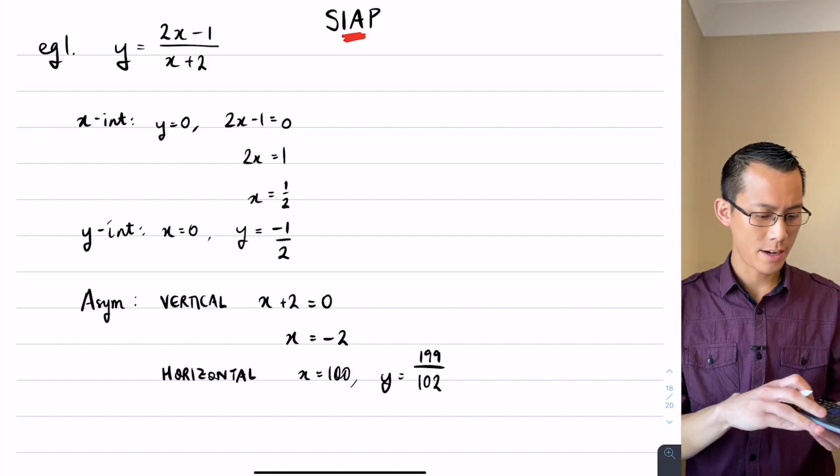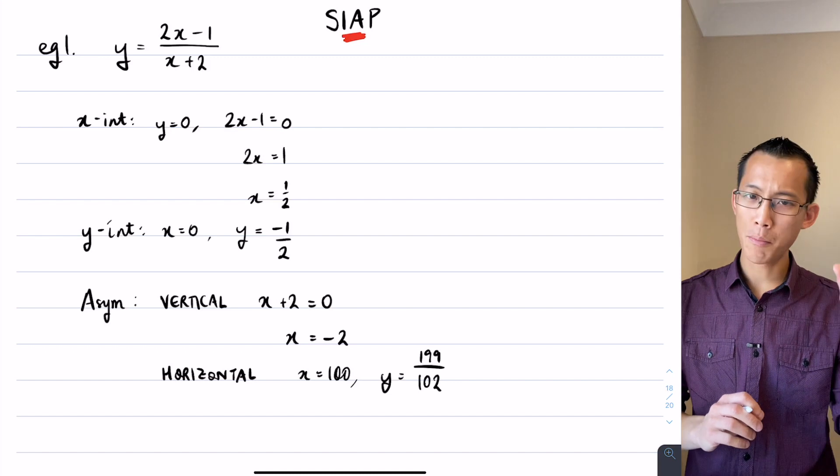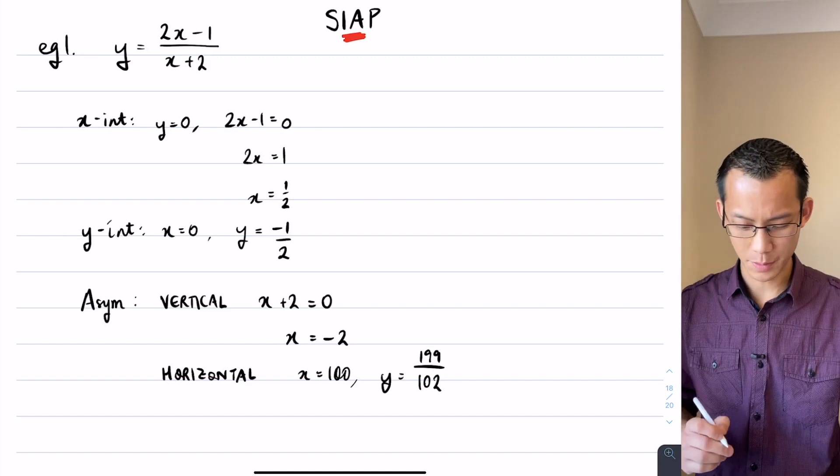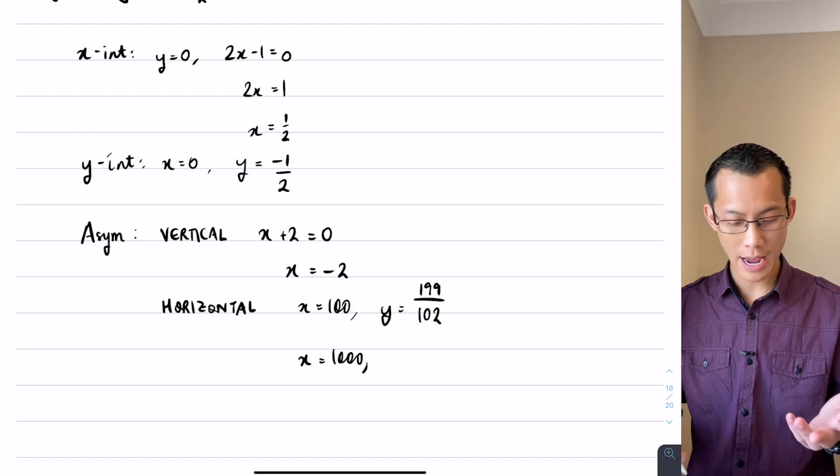I would get y equals 200 minus 1, so that's 199 divided by 102. Okay, now my calculator is going to tell me that 199 divided by 102, it's 1.95. That's what my calculator tells me. Okay, now what if I went bigger? If I went to x equals 1000, what would happen?